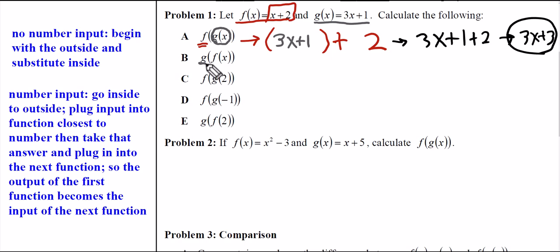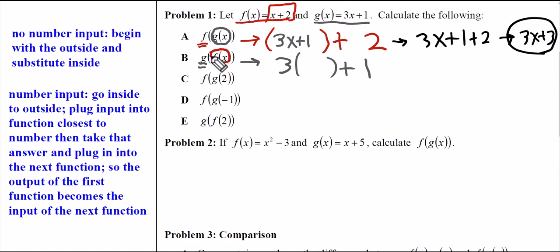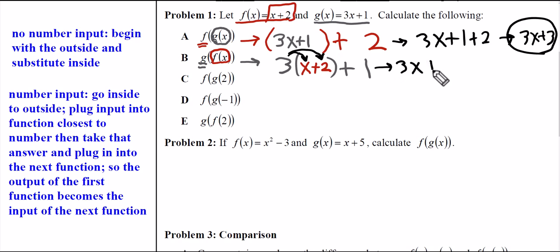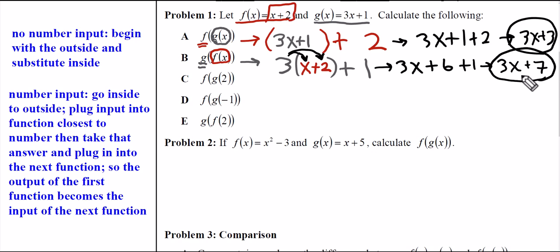Part B is asking for G of F of X, so G is on the outside. I'll start with G and prepare it — wherever I see an X, I make some space to insert the other function. What goes inside is F(x), so wherever there's an empty spot, I insert F(x), which is X plus 2. Simplifying following order of operations, I distribute the 3 to everything in the binomial and combine like terms to get 3x plus 7. So G of F of X equals 3x plus 7.